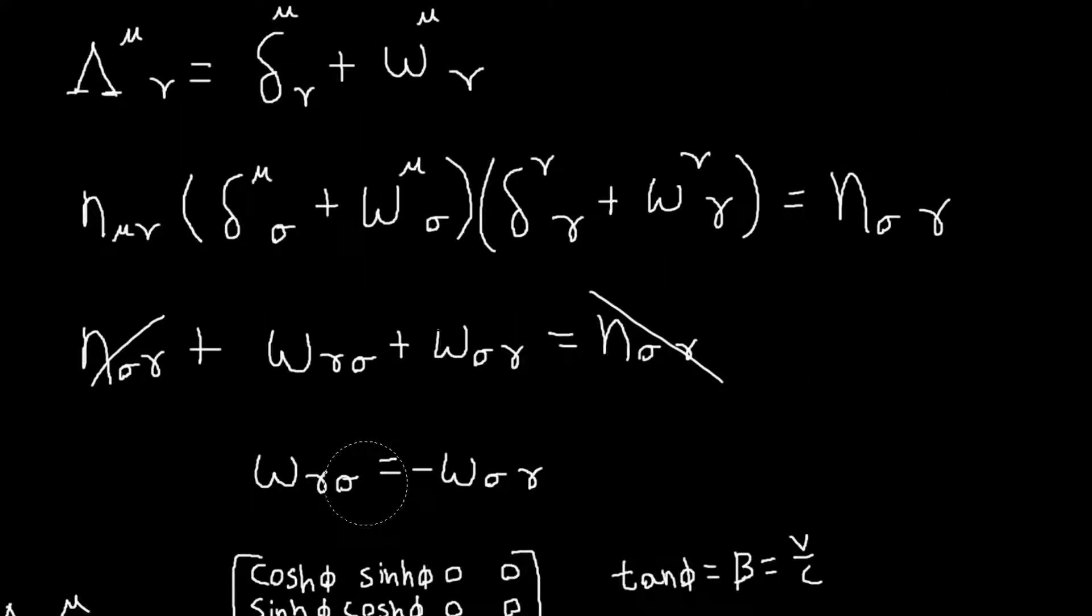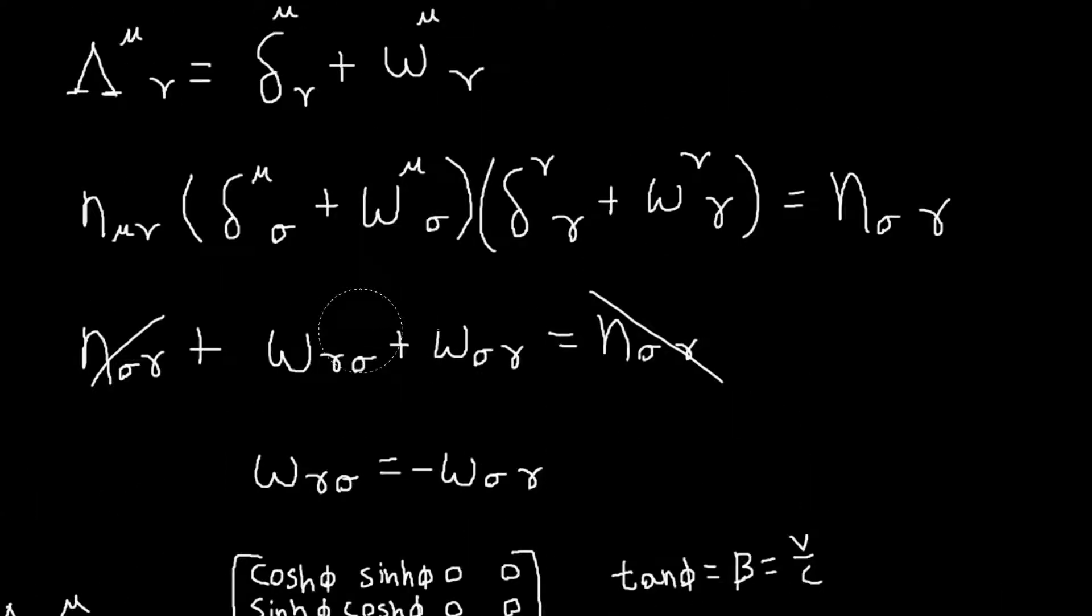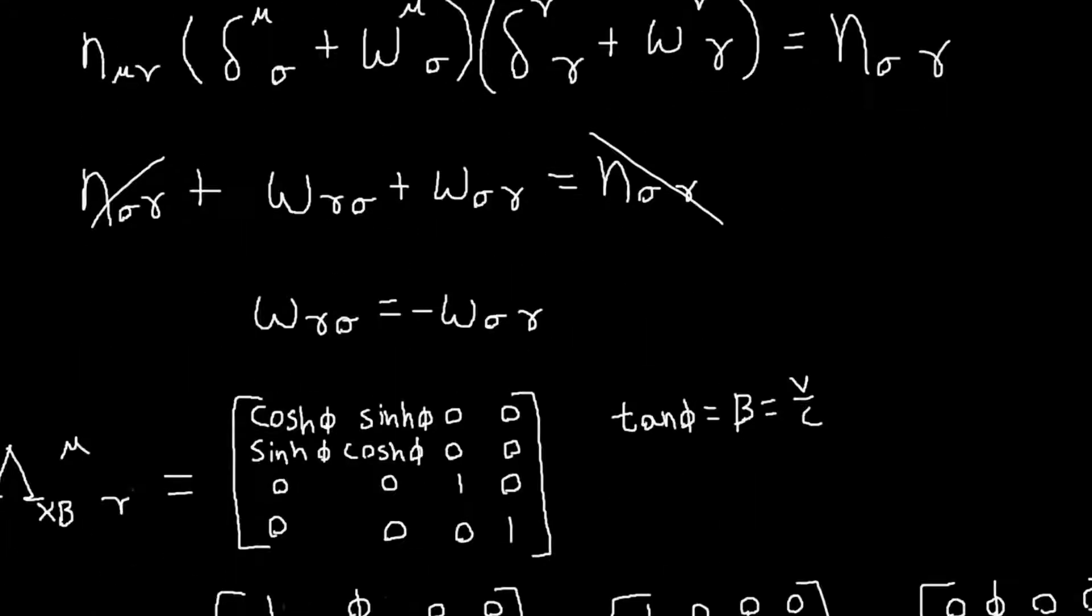So now let's move on to... So it wants us to write w. It wants us to write w, not w with two lower indices, but w with one raised index and one lowered index.